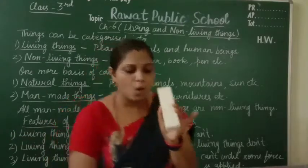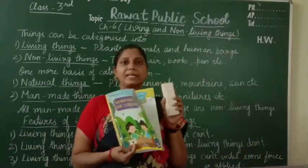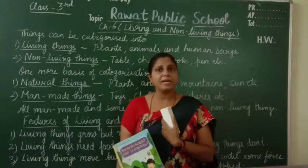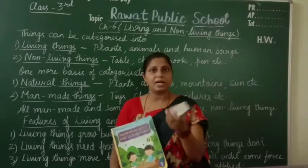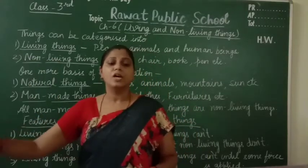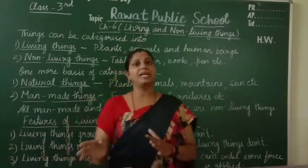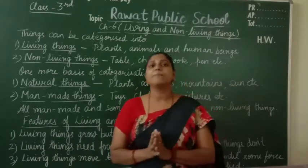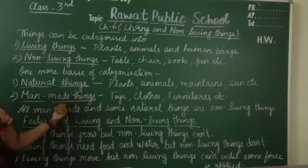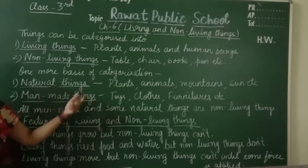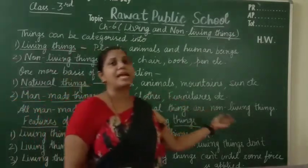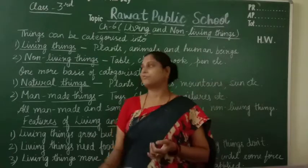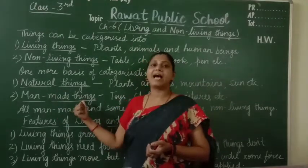Now, what about this duster? What about this book? Who made them? These are made by human beings. If we don't make them, they wouldn't exist. So, the things which are made by human beings can be categorized as man-made things. For example, toys, clothes, furniture, etc. So there is one more basis of categorization: natural things and man-made things.